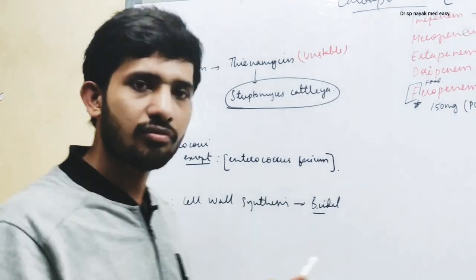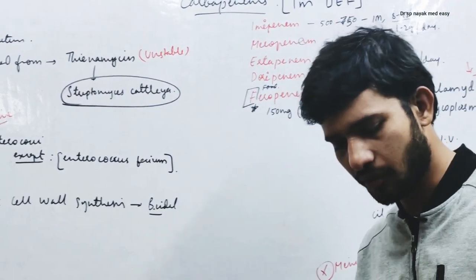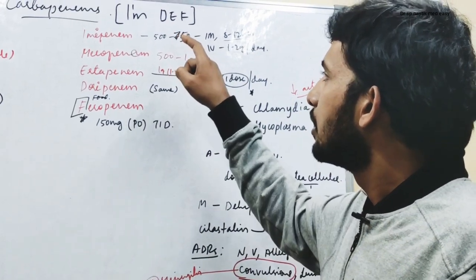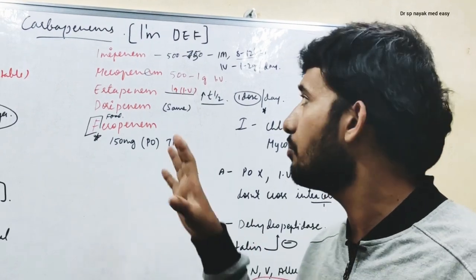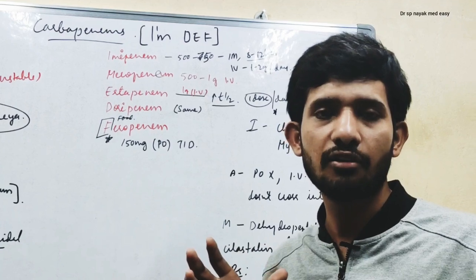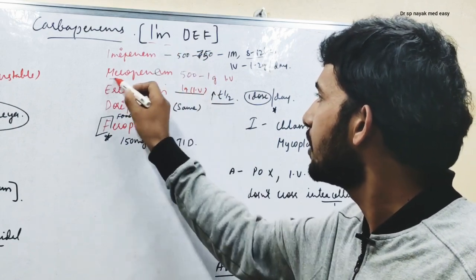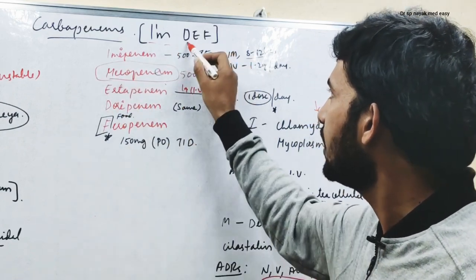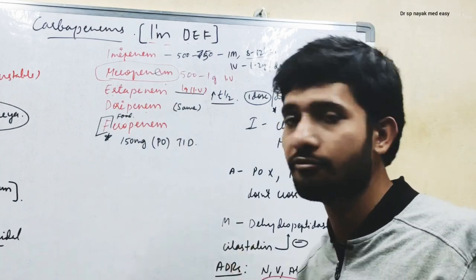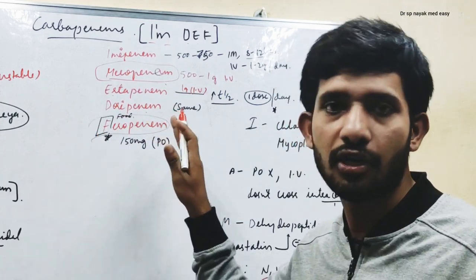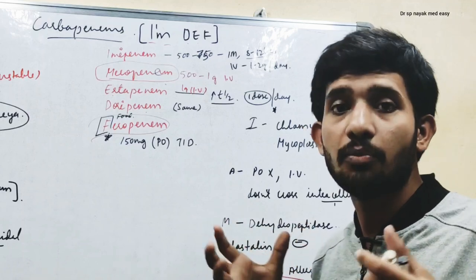Now let us understand the classification of carbapenems. Remember the mnemonic IMDEF for carbapenems — we have five different drugs. I indicates imipenem, M is meropenem which is a very important drug, D means doripenem, E means ertapenem, and finally F is faropenem. Faropenem is also a very important drug, and each drug has unique properties.